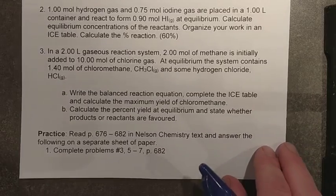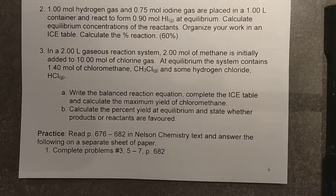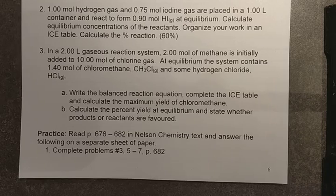All right, let's finish off lesson one here for chapter 15. One more example to look at. We want to take a look at example number three in the notes here. It says, in a two-liter gaseous reaction system, two moles of methane was initially added to 10 moles of chlorine gas.